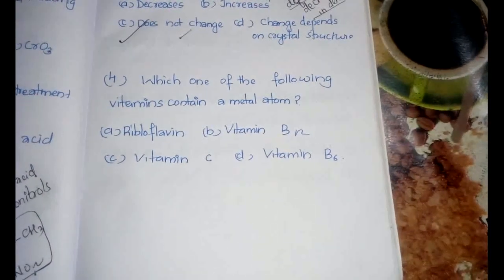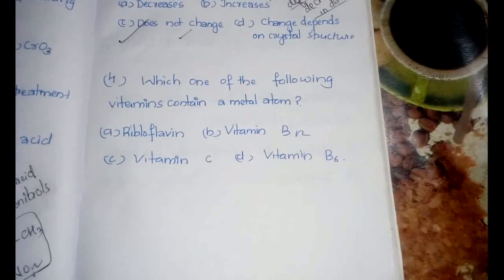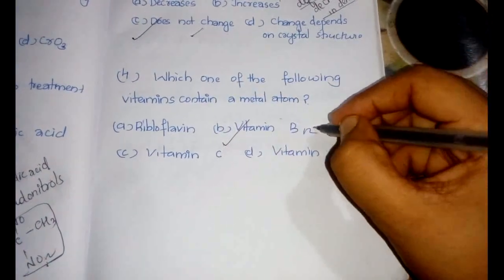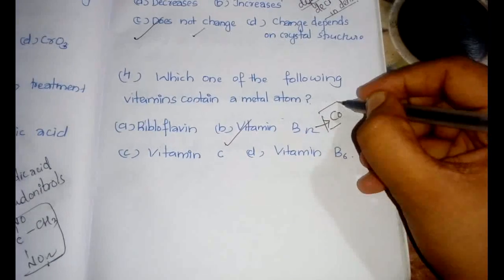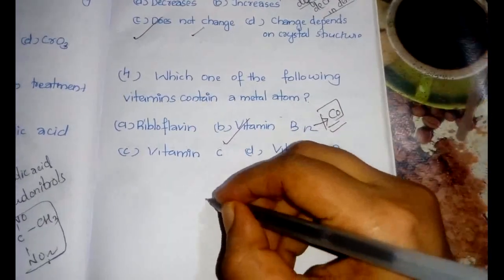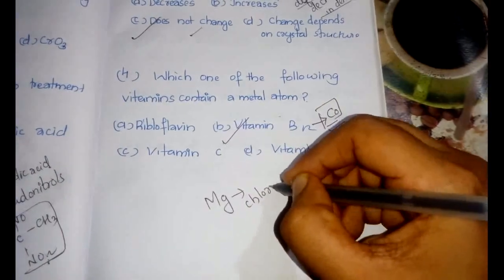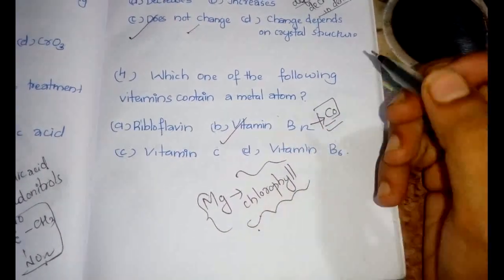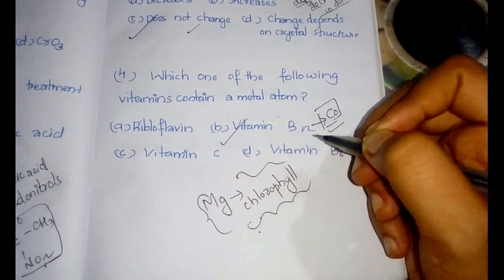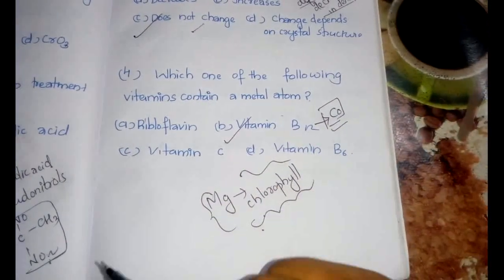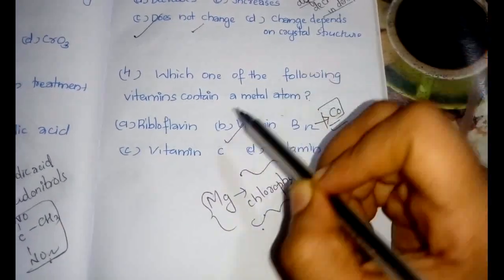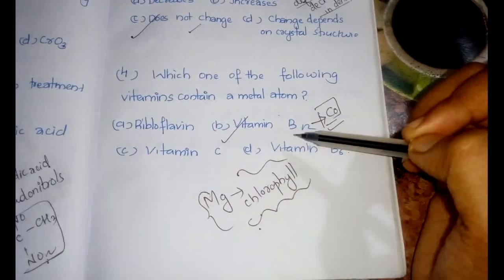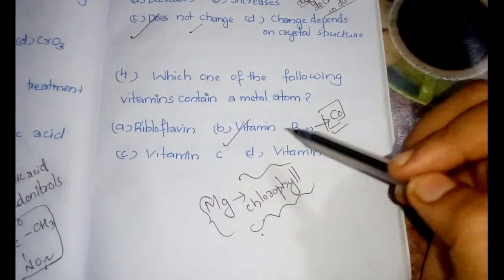The next question is one of the favorite questions of all the examiners. Which one of the following vitamins contains a metal atom? The answer is vitamin B12 and the metal atom that it contains is cobalt. This is an important question and apart from this, what you have to remember is magnesium is there in chlorophyll. So this is very important because only certain metals are there in vitamins and chlorophyll. For the BITSAT level exams and also for PG entrances, always these kinds of questions come. These two questions are the main important ones that can come from the biomolecules part. Please memorize this and go to the examination hall.